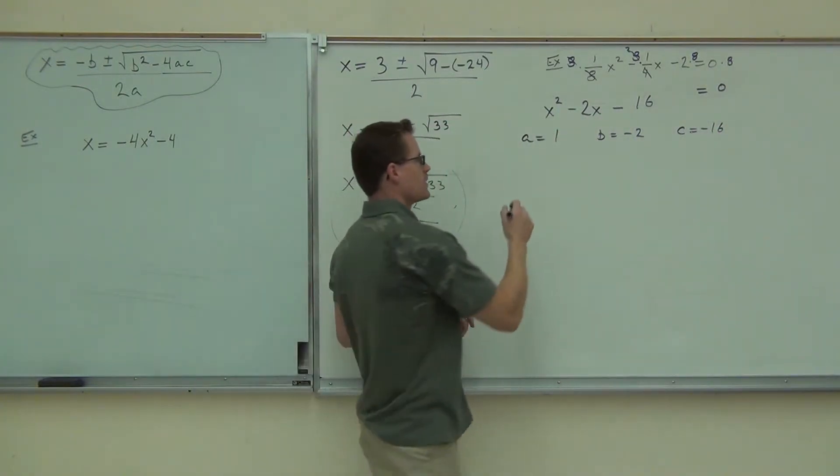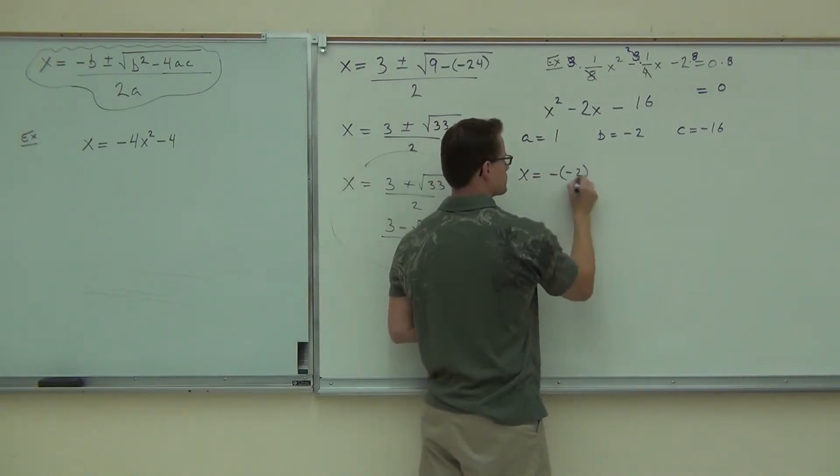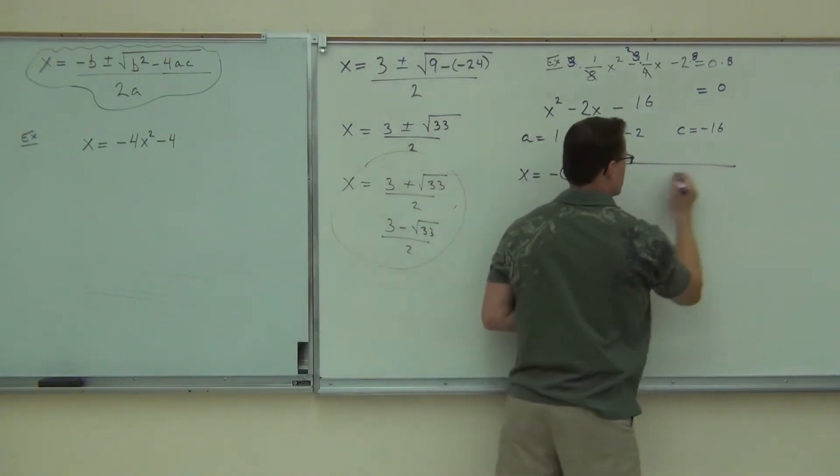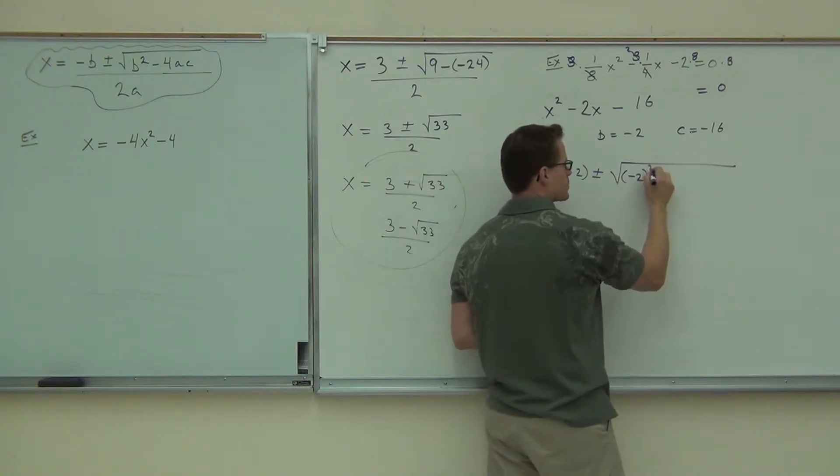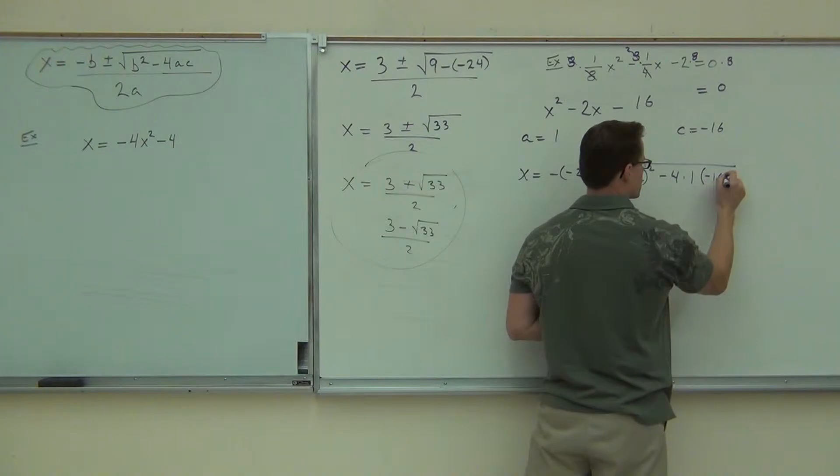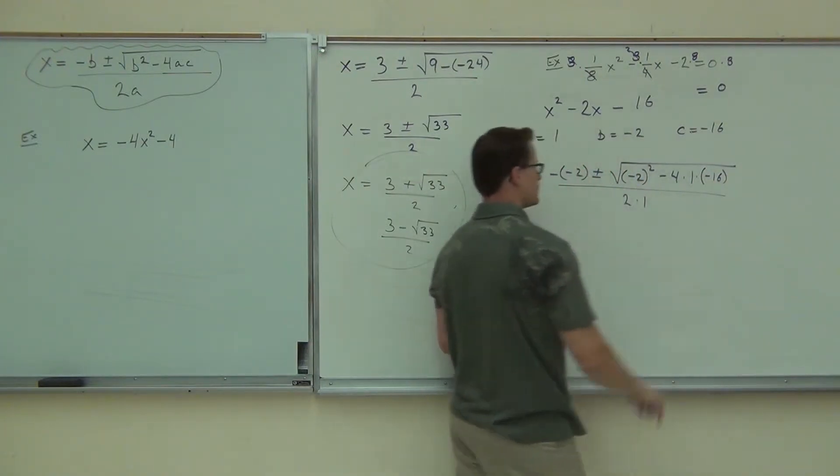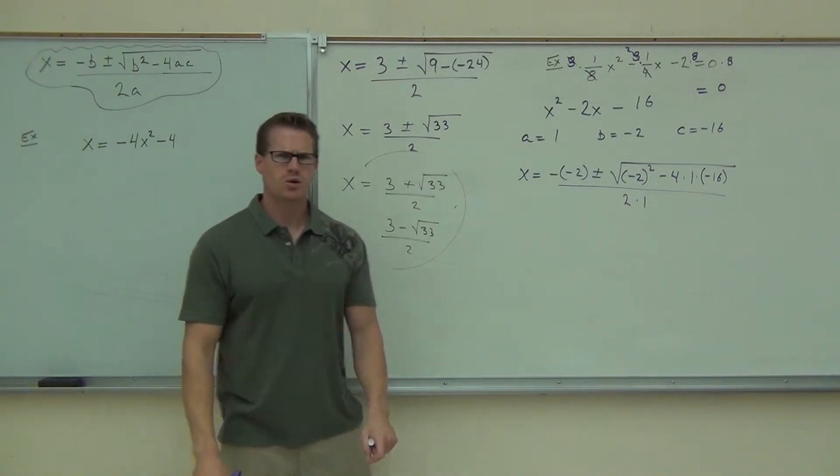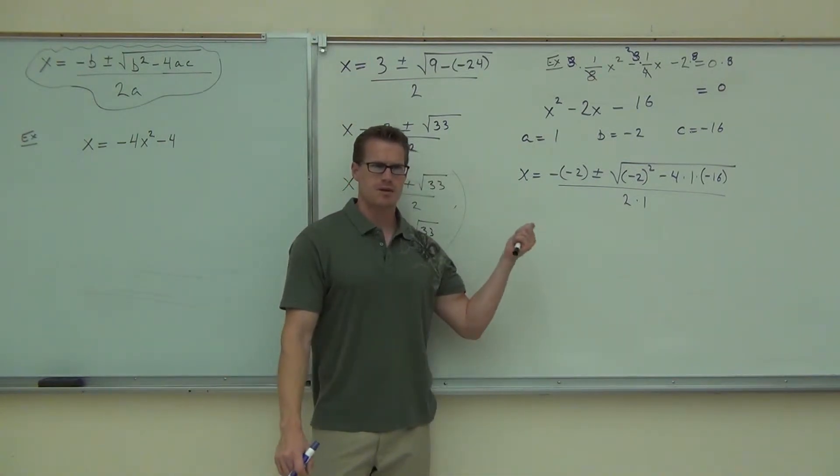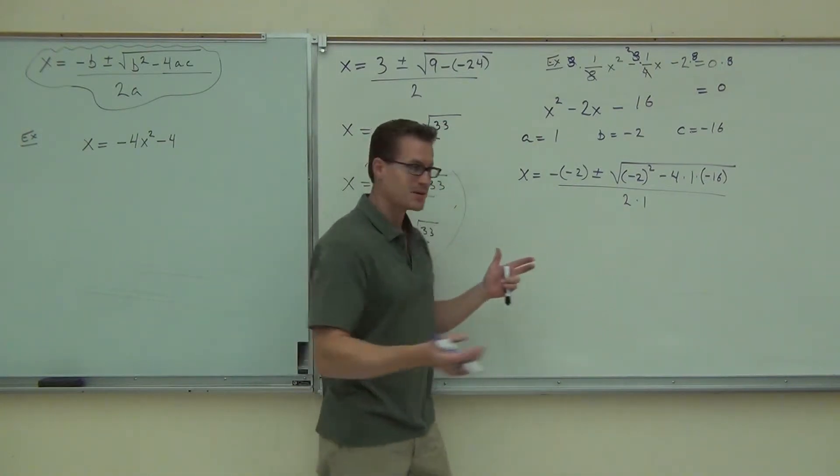Now, we're going to plug it in appropriately. We're going to have x equals negative negative two plus or minus the square root of negative two in parentheses squared minus four times A times C. All over two times A. Check your work against my work. Do you have exactly that on your paper? Hopefully, we both did it right.